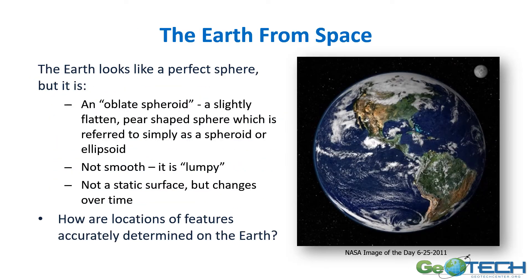The earth from space looks pretty much like a nice spherical globe, but unfortunately we're really an oblate spheroid — slightly squished and pear-shaped — and while it's not a perfect sphere, it's also lumpy so it's not a smooth surface. Not only that, we think of the earth as pretty unchangeable but it really does change over time. So how are features located on the surface of the earth, and how are relationships between features documented?